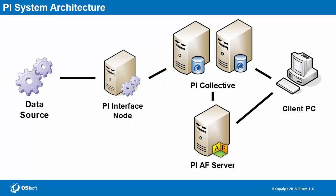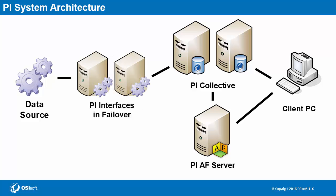So here is our architecture diagram again. At this point, let's also incorporate interface failover into our architecture. This is similar to a PI collective in that multiple instances are configured. So if one PI interface goes down, there's another instance that can pick right back up. Note that for PI interface failover, a maximum of two instances can be configured. Also, while many common and newer PI interfaces support interface failover, there are still some that do not. The user manuals for a PI interface will explicitly state if it supports interface failover.